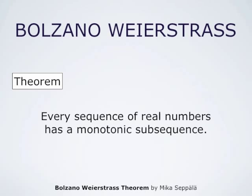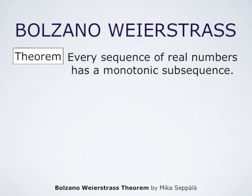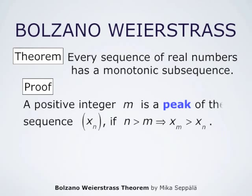The Bolzano-Weierstrass theorem says that every sequence of real numbers has a monotonic subsequence. To prove this, we start by defining the concept of a peak. We say that a positive integer m is a peak of the sequence x_n if all elements of the sequence after index m are smaller than x_m.